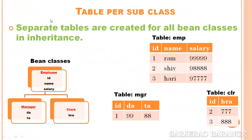In the Table per Subclass strategy, separate tables are created for all bean classes in the inheritance hierarchy. This means in the second strategy, for all the bean classes in our Hibernate application — for example, we have an Employee superclass and two subclasses: Manager and Clerk — separate tables will be created. In the Employee (superclass) table, columns will be created for the superclass properties: id, name, and salary.